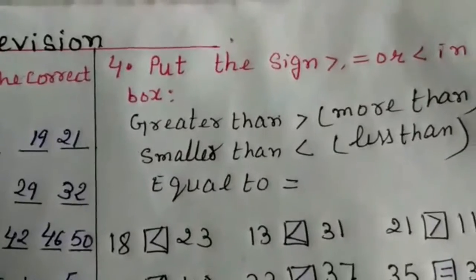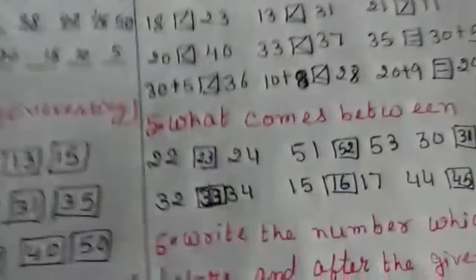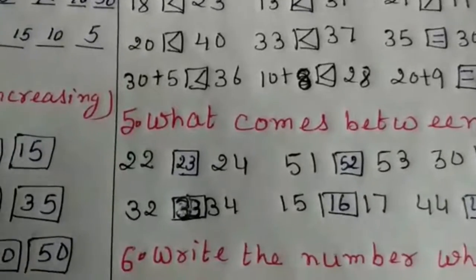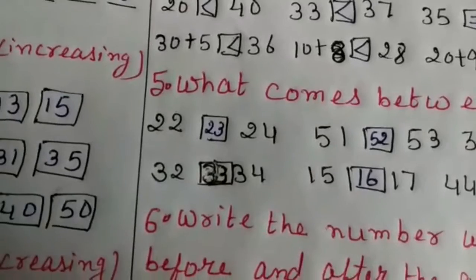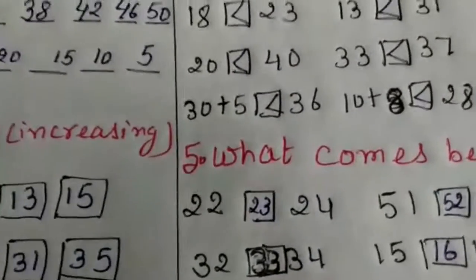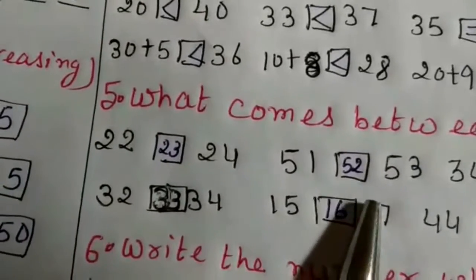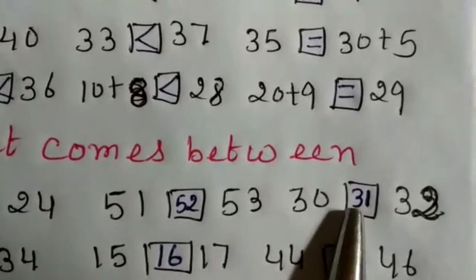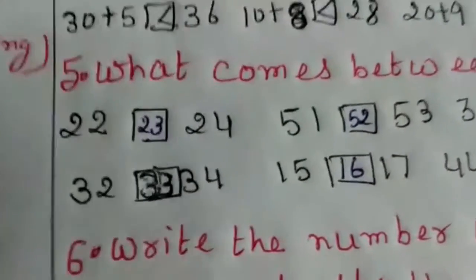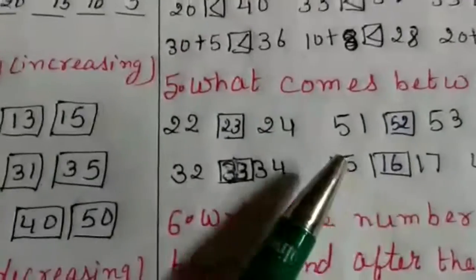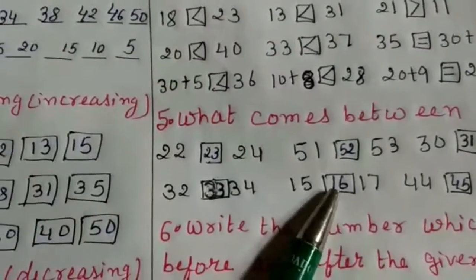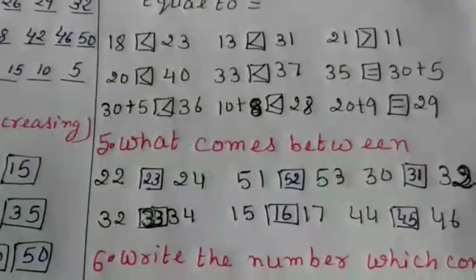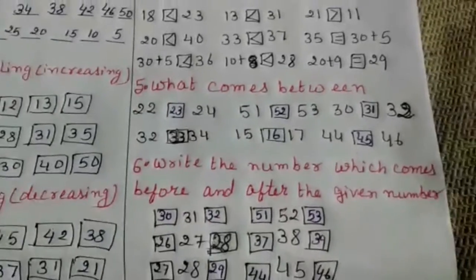Question number 5: what comes between? There are two numbers and we need to find which number comes between them. First: 22 dash 24 — after 22 comes 23, so we write 23. Next: 51 dash 53 — after 51 comes 52. Next: 30 dash 31 — wait, that is 30 dash 32, so 31 comes between. Next: 32 dash 34 — 33 comes between. Next: 15 dash 16 — wait, 15 dash 17, so 16 comes between. Last: 44 dash 46 — 45 comes between.